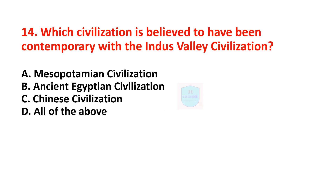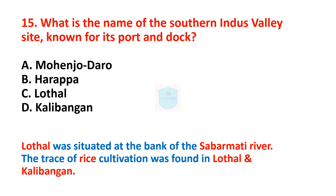Next question: which civilization is believed to have been contemporary with the Indus Valley Civilization? Correct answer is Mesopotamian civilization. Next question: what is the name of the southern Indus Valley site known for its port and dockyard? Correct answer is Lothal. Lothal was situated at the bank of the river Sabarmati. Remember that the traces of rice cultivation were found in Lothal and Kalibangan.